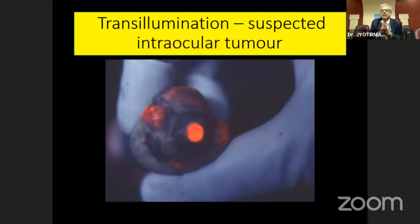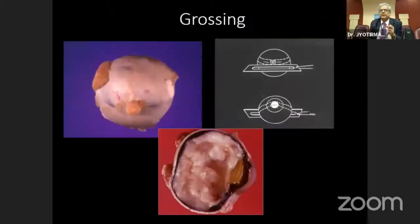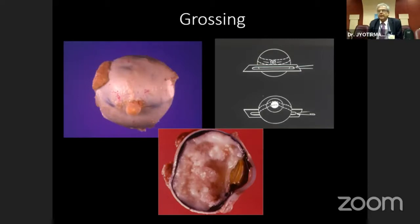We do transillumination on suspected intraocular tumors to find out which quadrant the tumor is in, and then we do the sectioning of the eyeball. The pupil-optic nerve section is the preferred mode of sectioning. You can see a chalky white mass lesion in the eye, which is due to retinoblastoma.